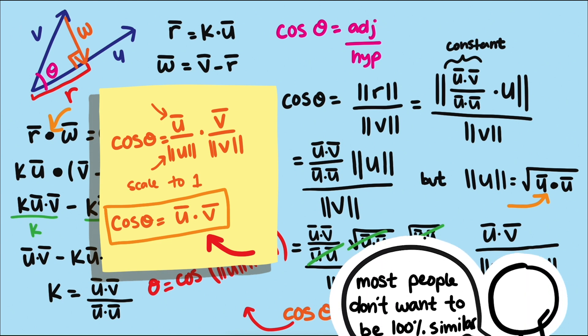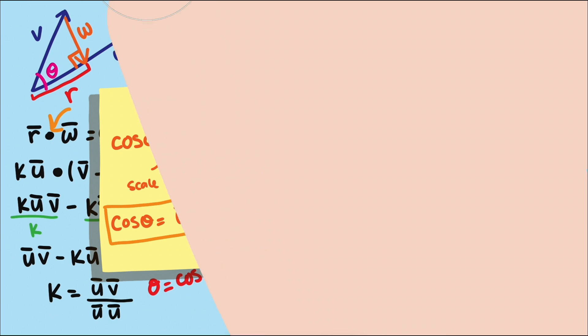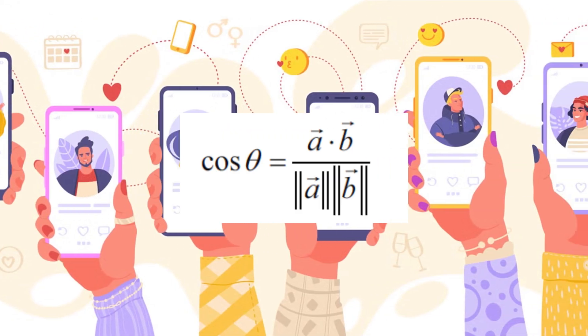Now you might be wondering, but most people don't want to be with someone who is 100% or even 90% similar to them, right? It's usually best to have some things in common and other things opposite. And that's the power of the cosine ranking formula.